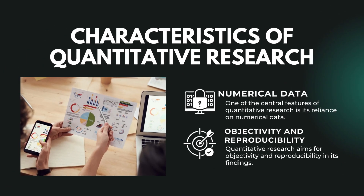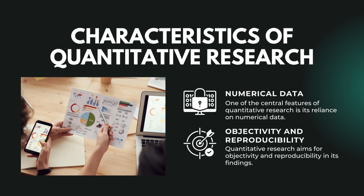The characteristics of quantitative research include: Number 1, Numerical Data — one of the central features of quantitative research is its reliance on numerical data. Number 2, Objectivity and Reproducibility — quantitative research aims for objectivity and reproducibility in its findings. The use of structured data collection methods reduces bias and subjectivity, allowing other researchers to replicate the study and obtain similar results.